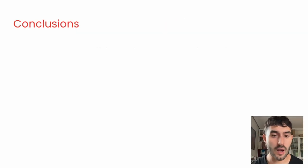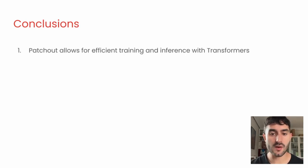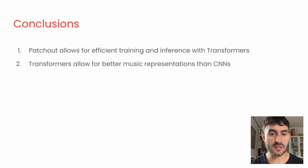Finally, these are our main takeaways from this work. Patchout is a powerful technique that allows for efficient training and inference with transformer-based music representation models. To take advantage of transformers for music representation learning, it should be taken into account that they depend heavily on the pre-training weights, they benefit from longer input sequences, and that the best representations tend to be extracted from the middle layers of the transformer.